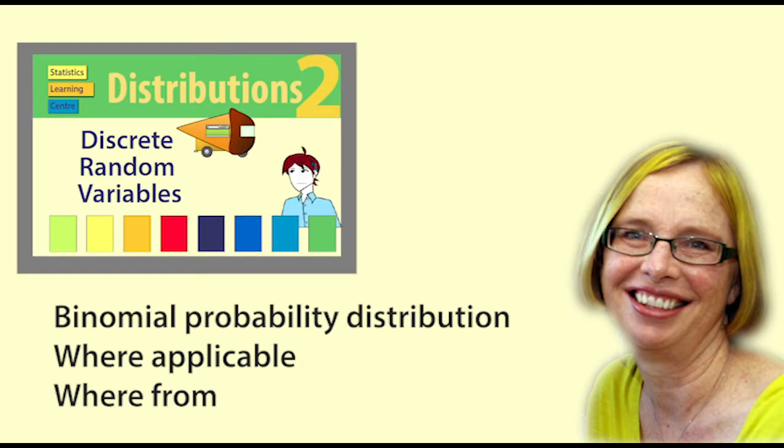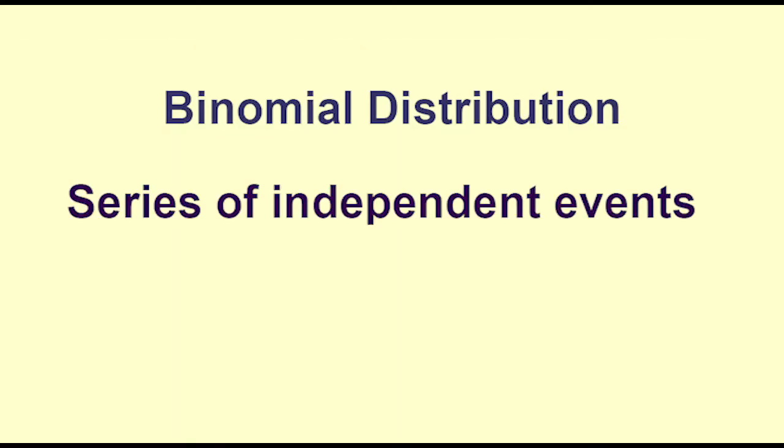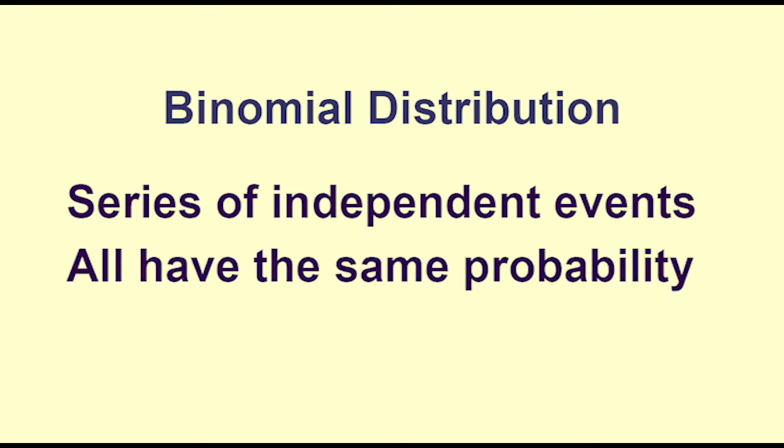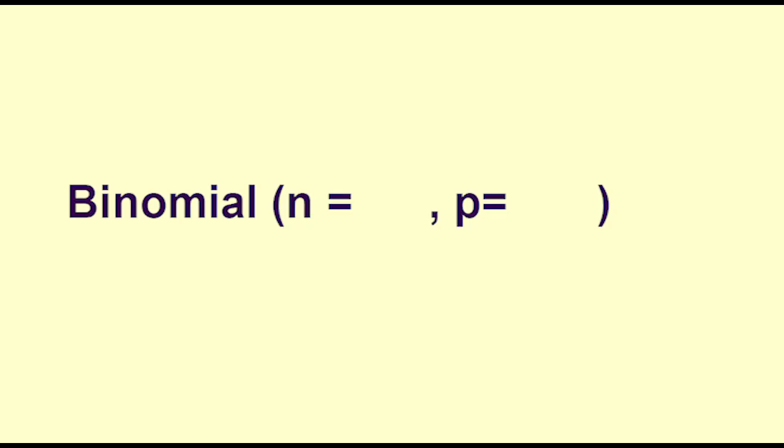This video builds on our previous videos about discrete distributions and probability distribution models. A binomial distribution is used to model situations where you have a series of independent events that all have the same probability and have just two outcomes. A binomial distribution is defined by the number of successes x out of a number of trials n, all of which have the same probability p. We state the distribution as binomial n equals, p equals.